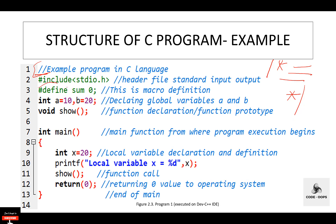Under the link section, we include the header files in the program. stdio.h is a header file for standard input/output functions. Then we define symbolic constants using #define — for example, #define SUM 0. The #define preprocessor directive is used to create symbolic constants. In this case, we have created a constant SUM assigned a value of 0, and SUM will be replaced by 0 throughout our code wherever it is used.